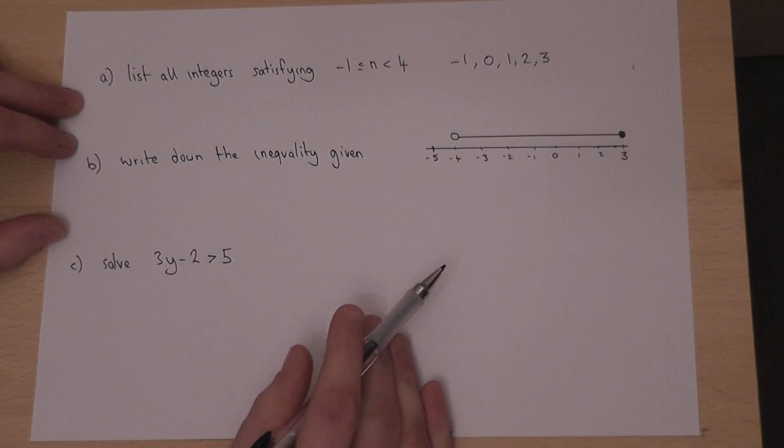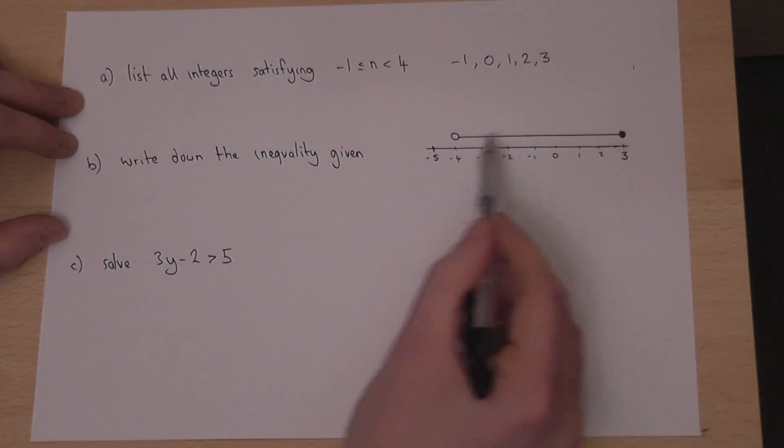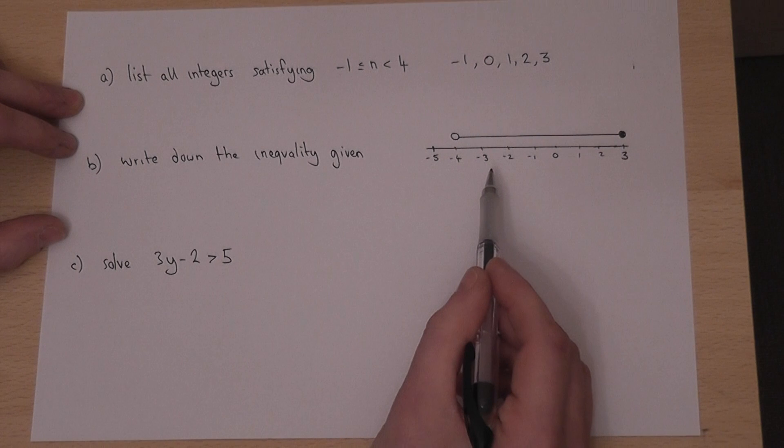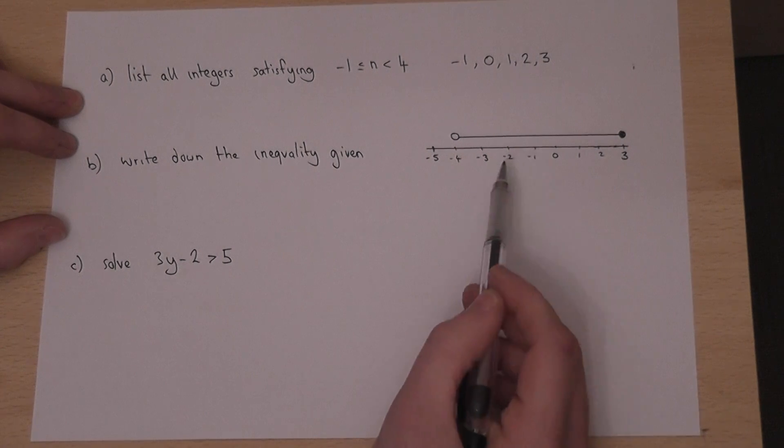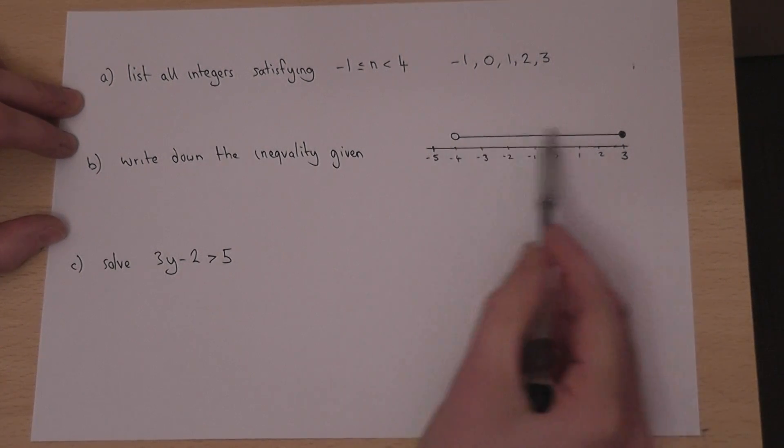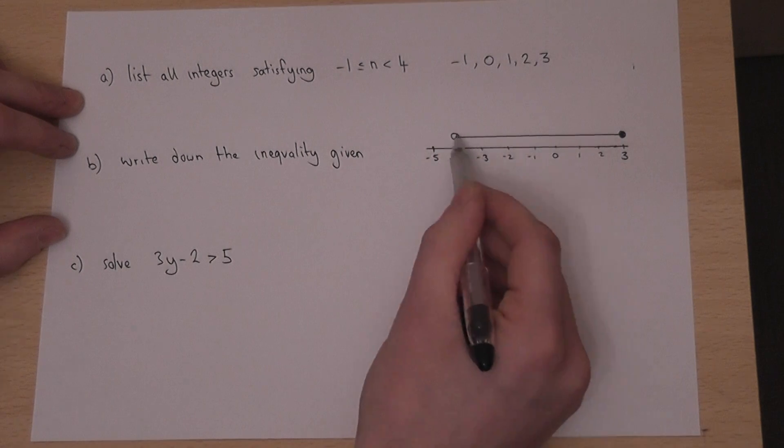In the second part, we're asked to write down what this represents. Now clearly it is any number between minus 4 and 3, but the open circle means don't include minus 4.